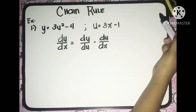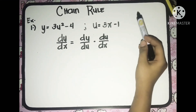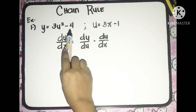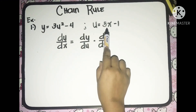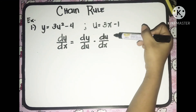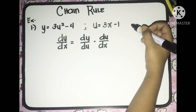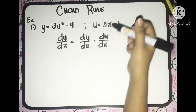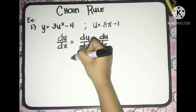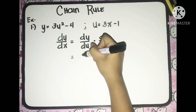For example, we are to use the chain rule to differentiate the function y is equal to 3u squared minus 4, and u which is equal to 3x minus 1. So using chain rule, we are going to differentiate this given. We have to substitute the value of y, so we have the derivative of y with respect to u.